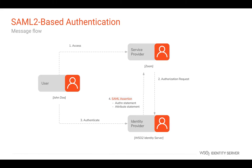In order to verify that this message was actually sent from the correct identity provider, the identity provider signs the response using its private key and the service provider validates it using the public key of the identity provider. If the message contains sensitive data, it will also be encrypted. Once the service provider validates the authentication aspect and the signature, it then creates a user session and provides the services accordingly.